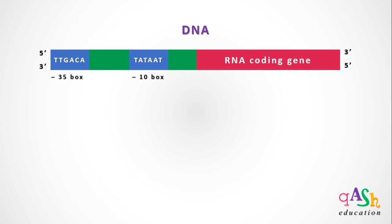This is a representation of the prokaryotic DNA. The promoter boxes in prokaryotic DNA are made up of two special sequences: the minus 10 box having the sequence Tataat, and the minus 35 box having the sequence Ttgaca. These promoter sequences are important as this is where the RNA polymerase will bind and initiate transcription.